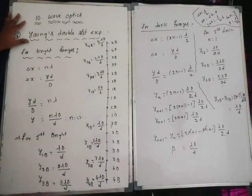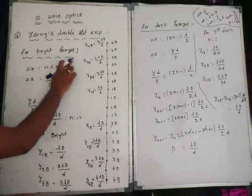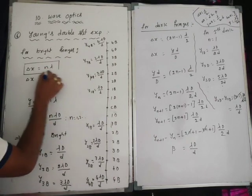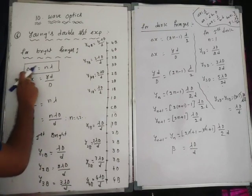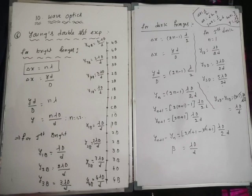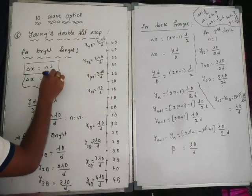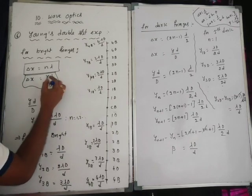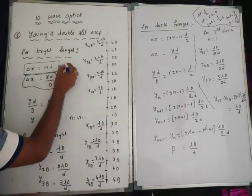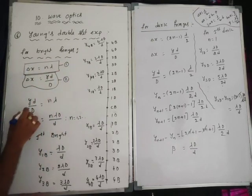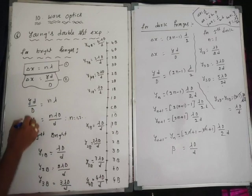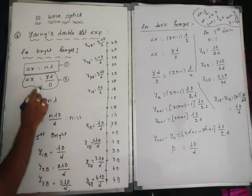Young's double slit experiment — for bright fringes, you know the condition is constructive interference. The constructive interference condition is delta x is equal to n into lambda. The mathematical expression from Young's double slit experiment gives delta x equal to yd divided by d. So from equations 1 and 2, yd by d is equal to n into lambda.